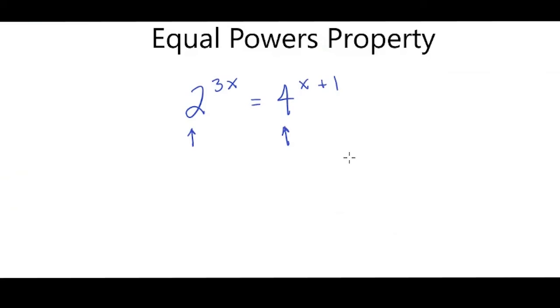So I can rewrite this as 2 to the 3x power equals 2 to the 2nd power raised to the x plus 1 power. And what I know about exponents is I can multiply this by this entire expression.